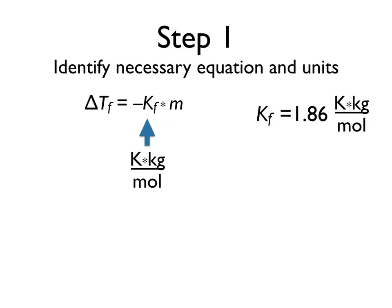Delta Tf represents the amount that our temperature of our freezing point will change. Since it's a temperature, it's going to be in terms of Kelvin. In order to make all our units work out, we need to look at M, which is our concentration.